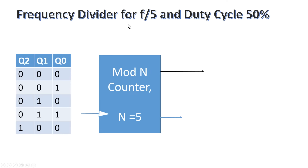Let us see how to design a clock frequency divider for f/5 with 50 percent duty cycle. As stated earlier, we need to include a mod-n counter. Since n is 5, we need a mod-5 counter. Mod-5 counter counts from 0 to 4, and this is its state table. Let us give a close look to its MSB output Q2. This is also a signal of frequency f/5, but its duty cycle is not 50 percent — it remains zero for four clock cycles and remains high for only one clock cycle.